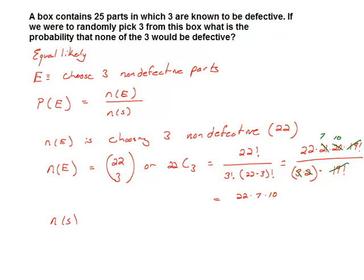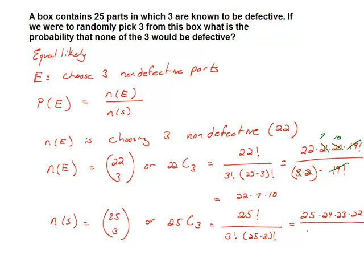The number of ways that we can select three parts in general will be 25 choose 3. That's going to be our denominator term. So I have 25 factorial over 3 factorial times 25 minus 3 factorial. 25 times 24 times 23 times 22 factorial, all over 3 factorial times 22 factorial.